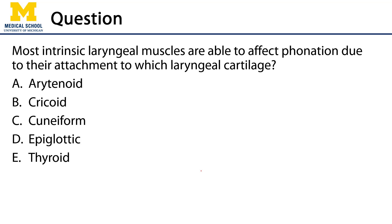That leads us to our assessment question: most intrinsic laryngeal muscles are able to affect phonation due to their attachment to which laryngeal cartilage? Option A is arytenoid — that sounds pretty good. Option B is cricoid — many intrinsic laryngeal muscles also attach to the cricoid cartilage, so that's a reasonable answer too. Cuneiform and epiglottic are no. Thyroid cartilage — some muscles, but not too many. So we're limited to arytenoid and cricoid. The arytenoid cartilages are the most dynamic, having the most intrinsic laryngeal muscles attached to them, so the best answer is A, arytenoid cartilage.